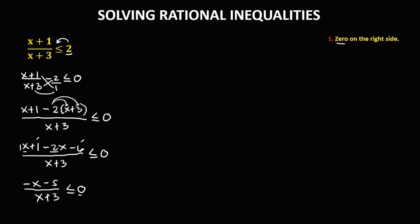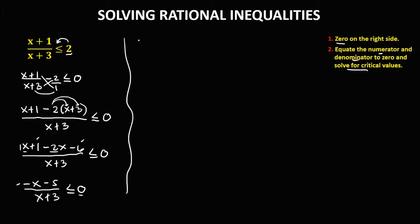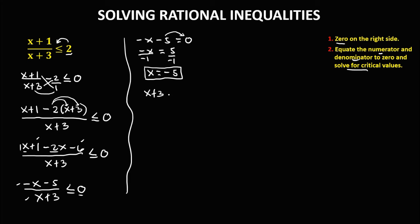Since the right side is equal to 0, we can equate the numerator and denominator to 0 to solve for the critical values. For the numerator, we have negative x minus 5 equals 0. So negative x equals positive 5, then divide both sides by negative 1, so x equals negative 5. This is the first critical value. For the denominator, x plus 3 equals 0, so x equals negative 3. This is the second critical value.